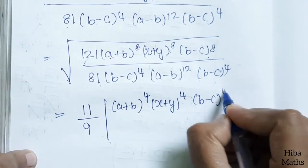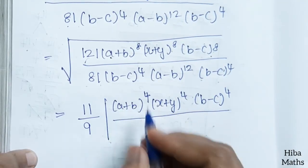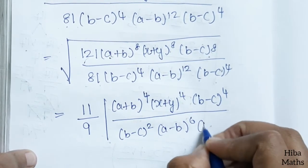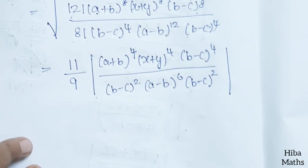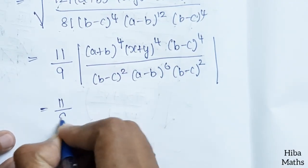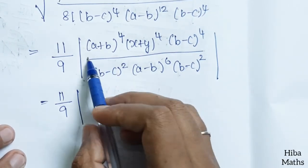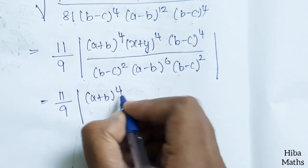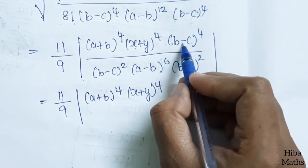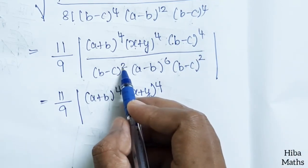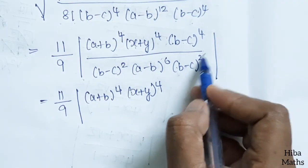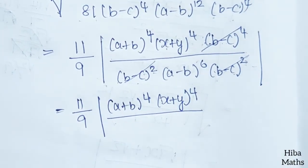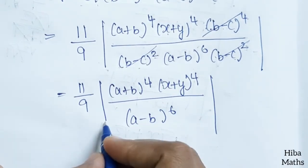In the denominator, (b-c) power 4 divided by 2 gives power 2, and (a-b) power 12 divided by 2 gives power 6, and (b-c) power 4 divided by 2 gives power 2. The result is 11 by 9. (a+b) whole power 4 stays on top. (x+y) has nothing in common with denominator. (b-c) power 4 in numerator cancels with (b-c) power 2, leaving power 2 net. The final answer is (a minus b) whole power 6.